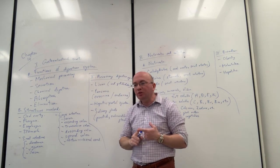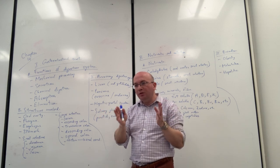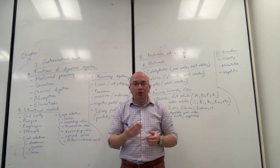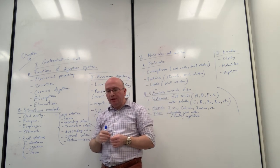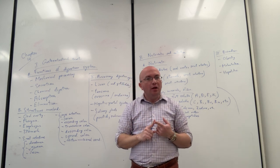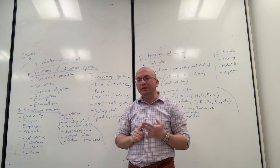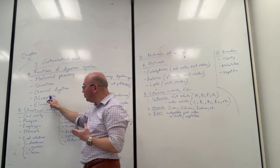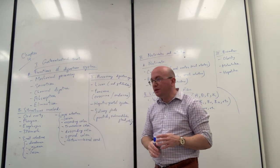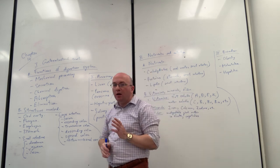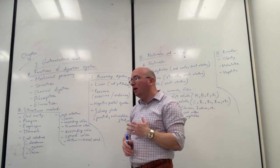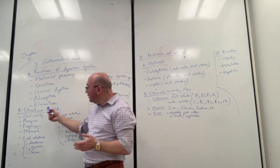Enzymes break down larger pieces of food into smaller and smaller molecules until they can be absorbed by the bloodstream. Ultimately we need to do absorption, which is the process of getting small molecules — like glucose, amino acids from proteins, and fats — into our bloodstream so they can go to all the cells in the body. Finally, there's elimination, which is the process of getting rid of waste material at the end of the digestive tract, usually in the large intestine, where it is expelled from the body.